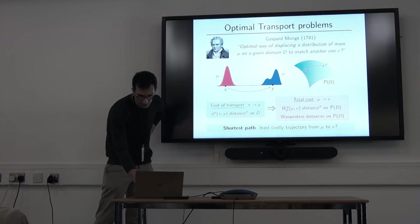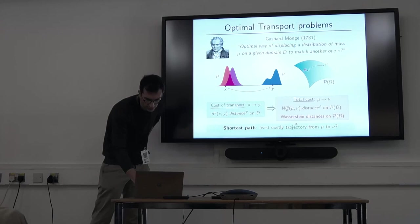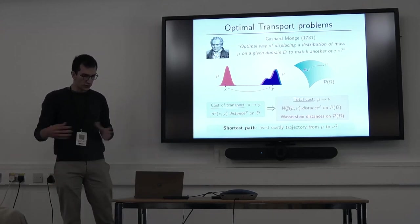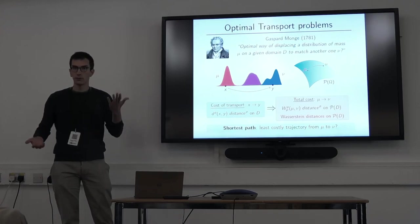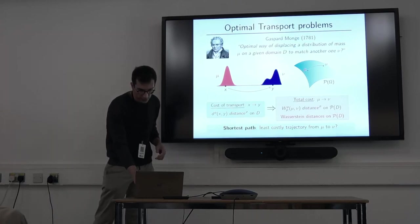And once you have this, in fact, what you have is more, because you also can talk about geodesics, or shortest paths on this space, which are the best ways of displacing this mass. And this looks like this. So you really have this horizontal type of interpolation, which is very different from what you would have if you try to do just a linear type of interpolation between the two distributions.